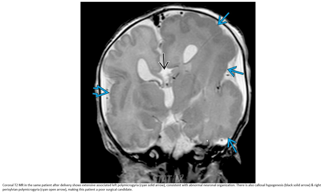This is the case. This is the coronal T2 image. The patient on delivery shows extensive association with polymicrogyria, consistent with abnormal neural organization. This also shows corpus callosum hypogenesis and right-sided polymicrogyria, making this patient a poor surgical candidate.